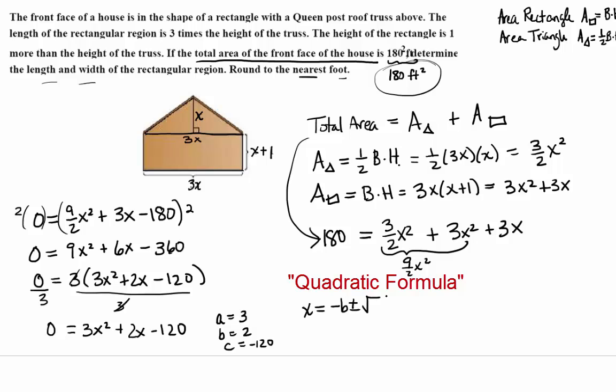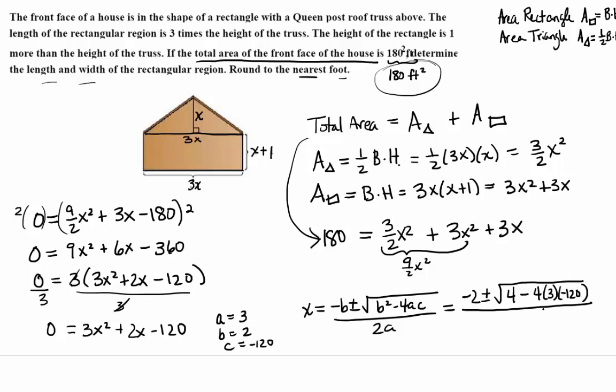Plugging into our formula, negative B plus or minus the square root of B squared minus 4AC all over 2A. Let's see what we get. Negative 2 plus or minus the square root of 2 squared is 4 minus 4 times 3 times negative 120 over 2 times 3. This is going to be 1,444 over 6.